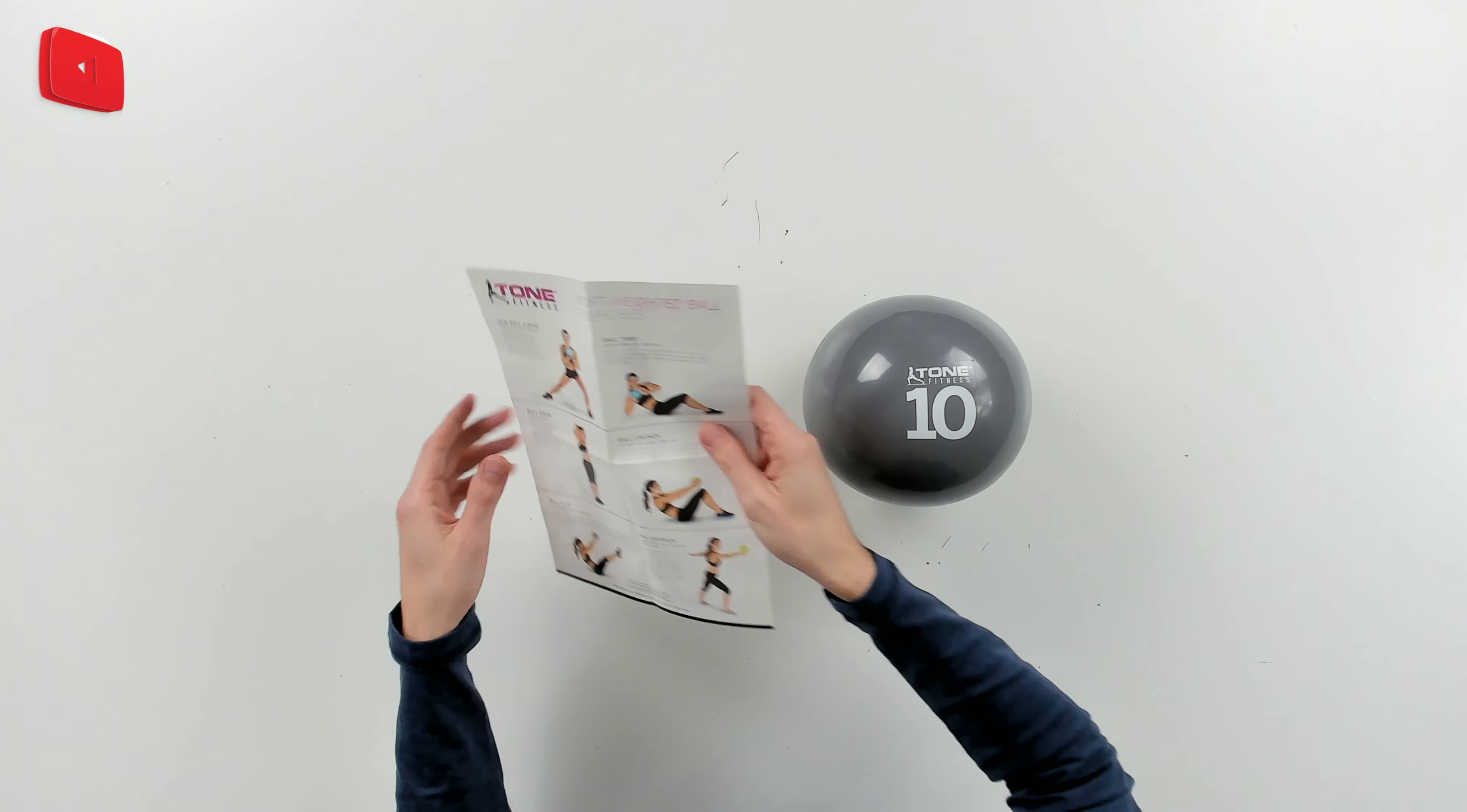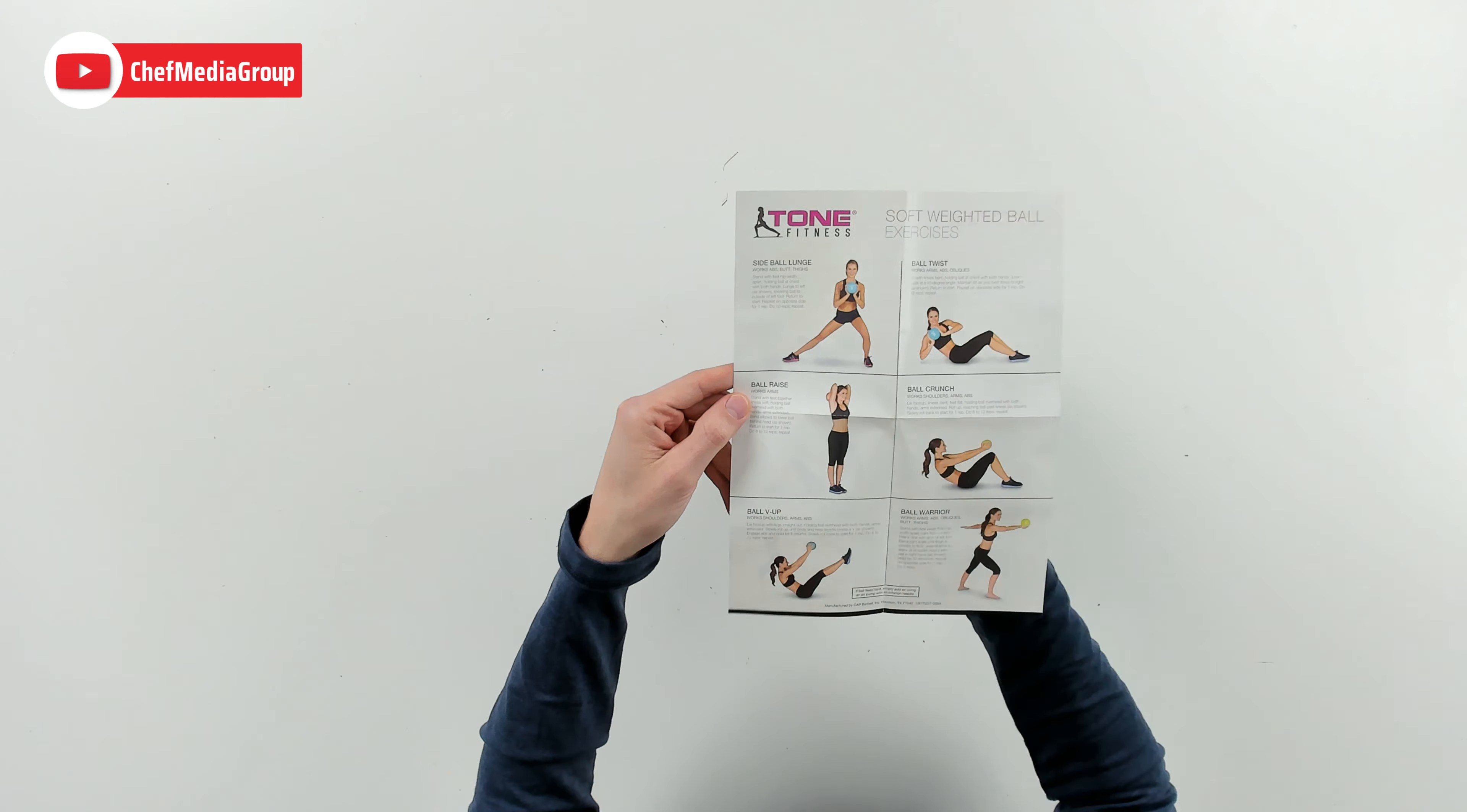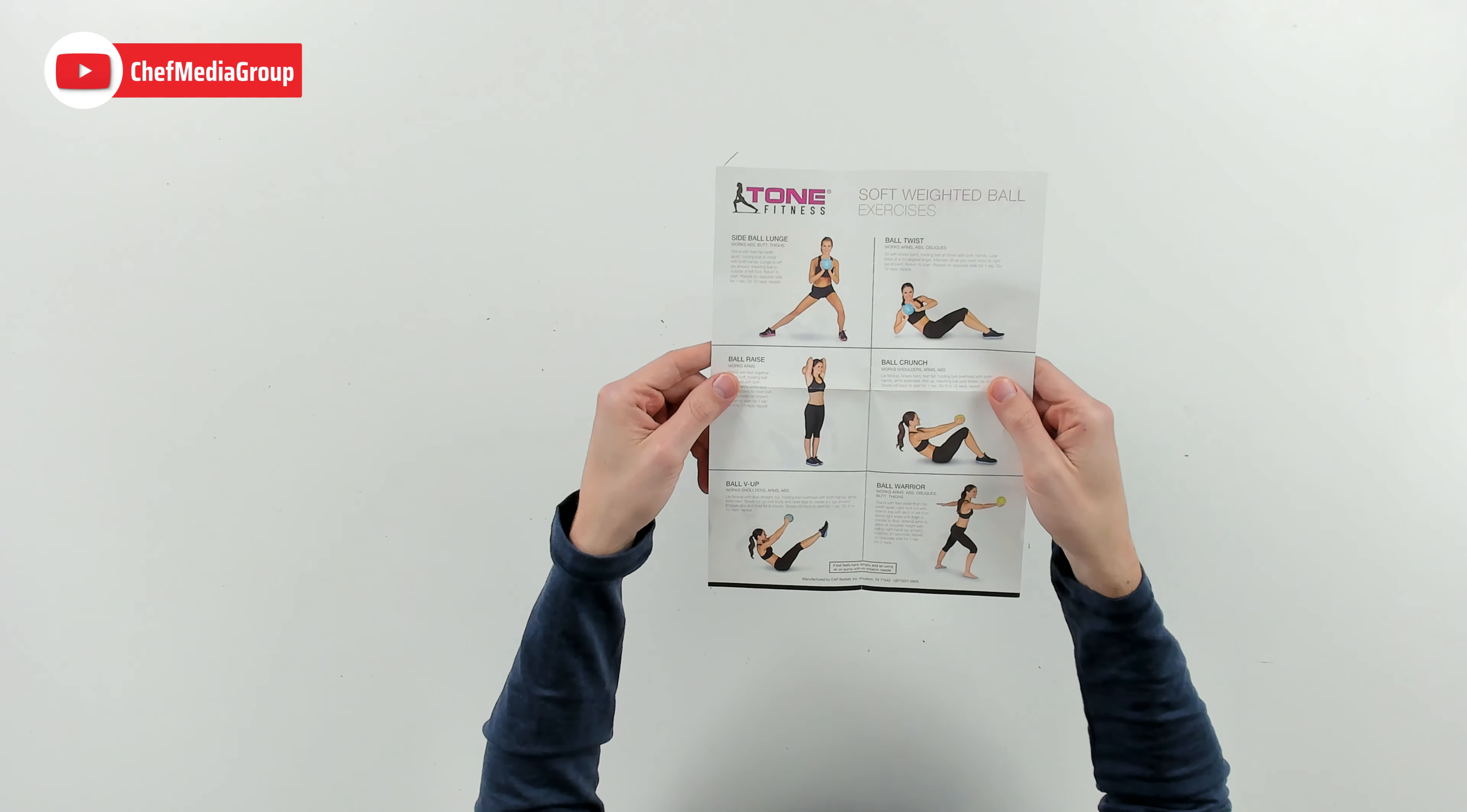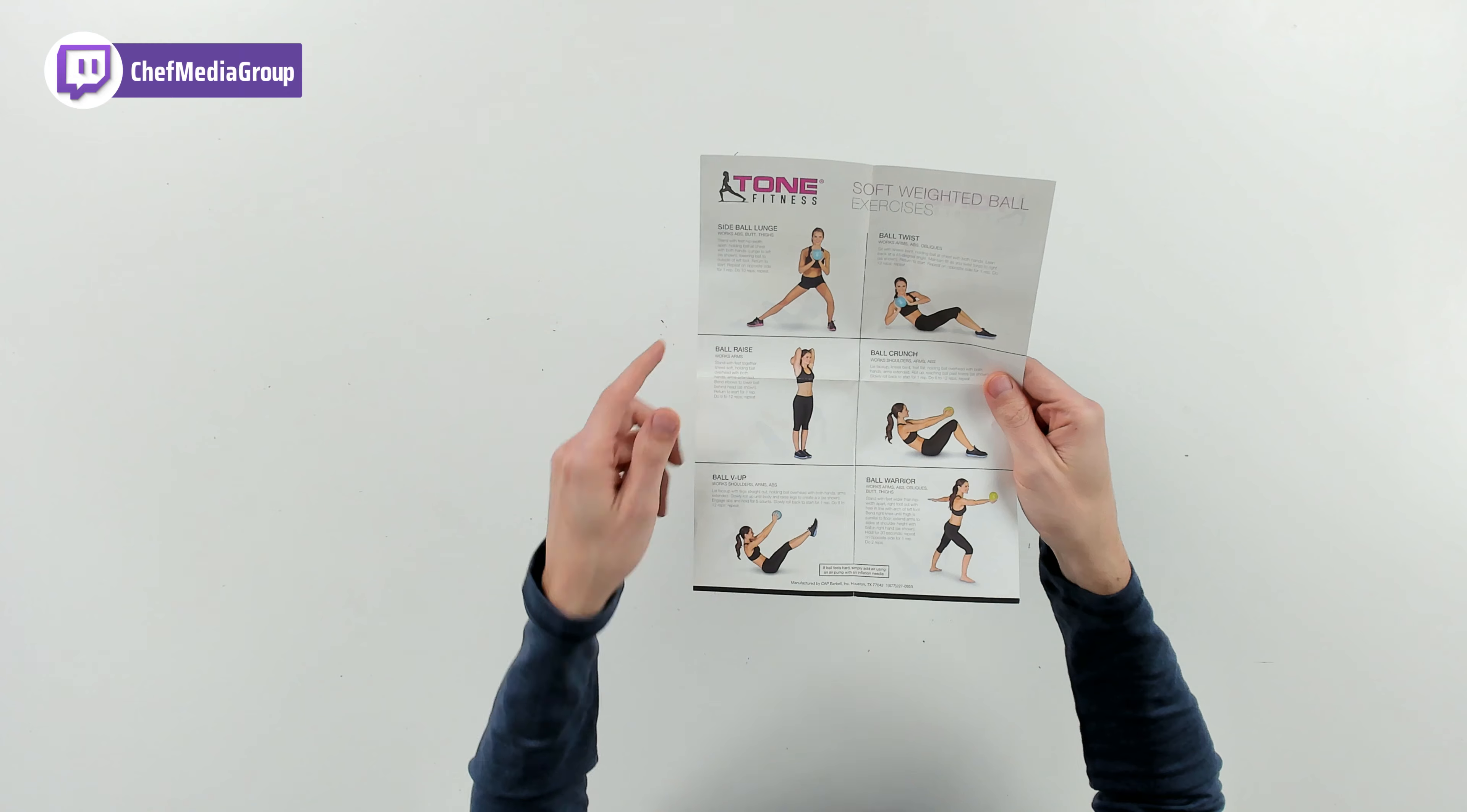Here are all the contents. First up, you can see we have our soft weighted ball exercises. We have six of them: side ball lunge, ball twist, ball raise, ball crunch, ball v-up, and ball warrior.